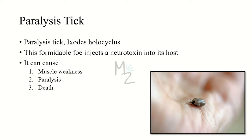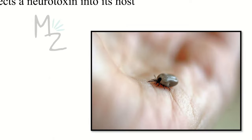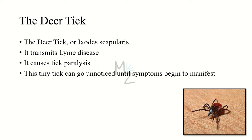The third species is the paralysis tick, also called Ixodes holocyclus. This formidable tick injects a neurotoxin into its host and is responsible for causing muscle weakness, paralysis, and death. You can see this is the paralysis tick — the common one you might have encountered.